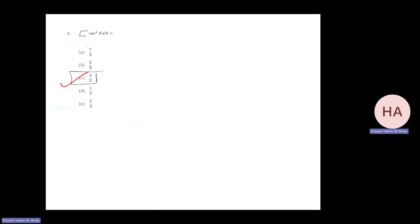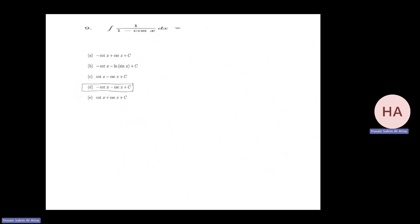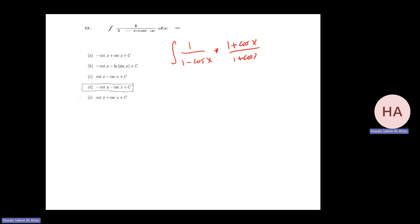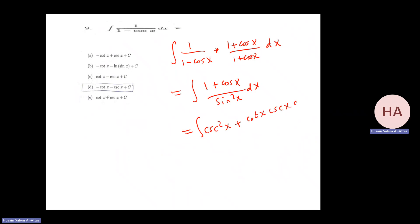For one over one minus cosine x — same idea as with the sine. I multiply by one plus cosine x over one plus cosine x. That gives integral of one plus cosine x over sine squared x dx. This splits into cosecant squared x plus cosine x over sine x, which is cosecant squared times cosecant x dx. Integrating gives negative cotangent minus cosecant.